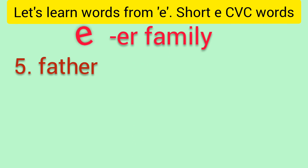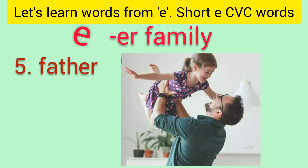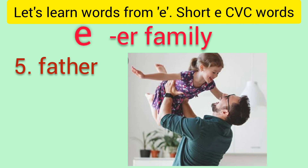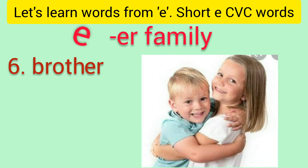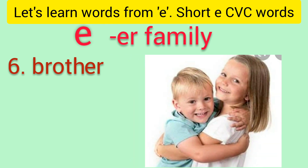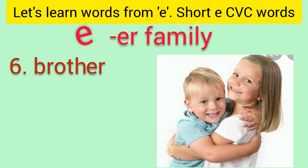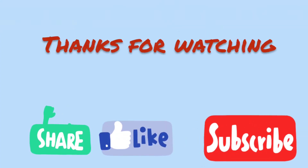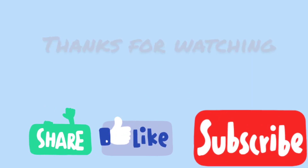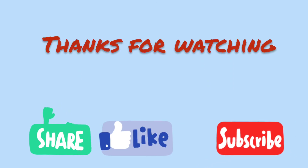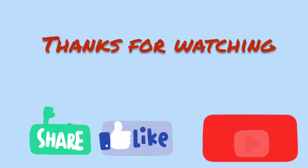Number five is F-A-T-H-E-R: father. Look at how a father is playing with his daughter. Number six is B-R-O-T-H-E-R: brother. Look at this sibling bond — how they are cuddling each other. Thank you for watching. I hope you liked the video. This video tells you about the short vowel sound of E. Thank you.